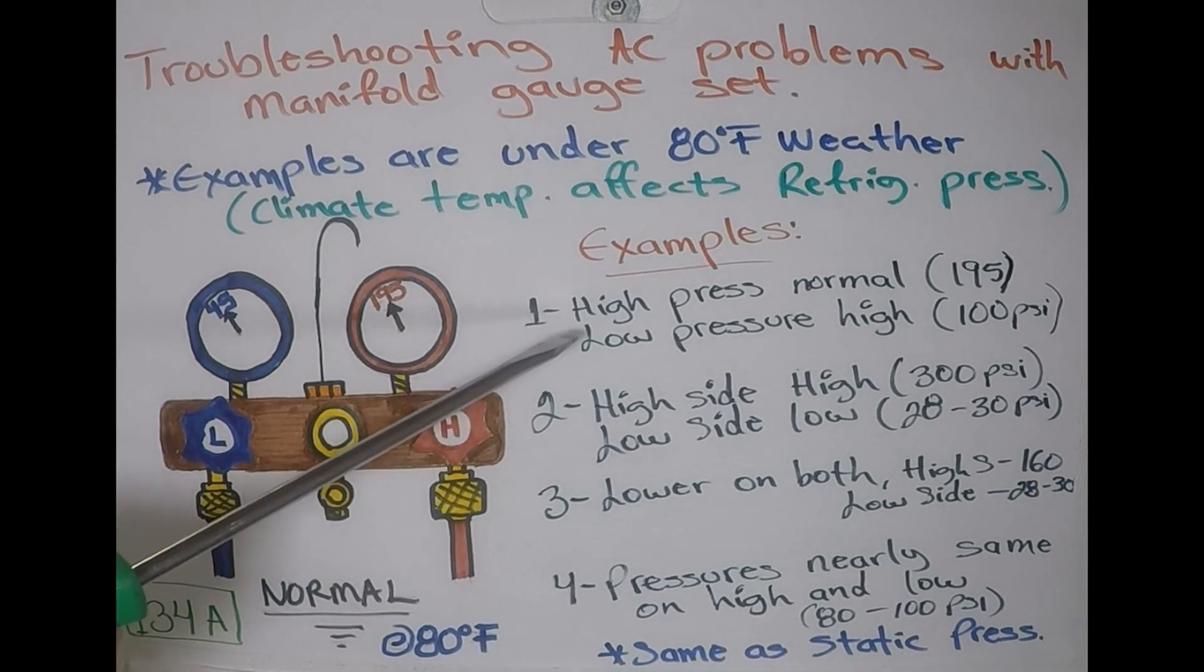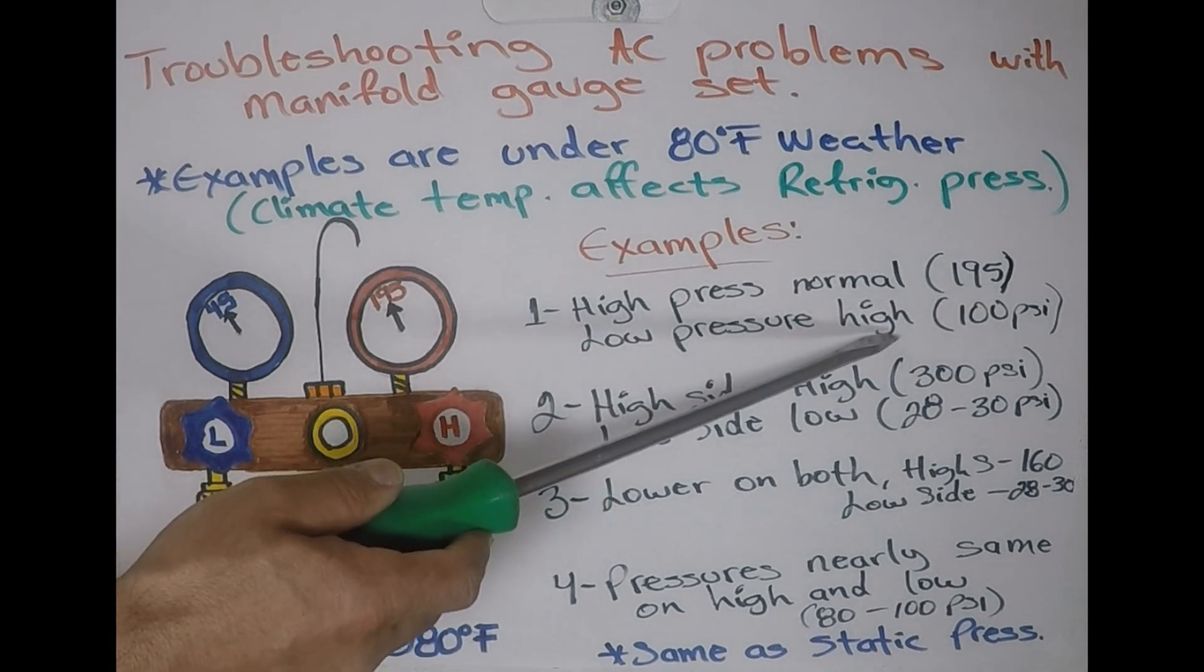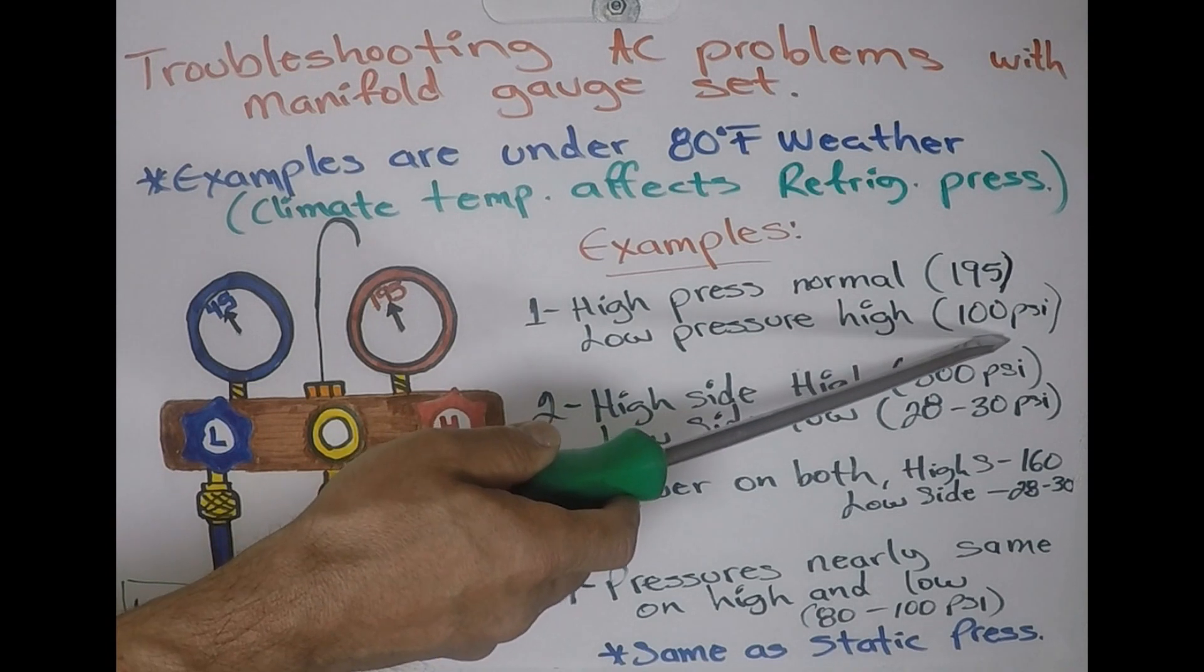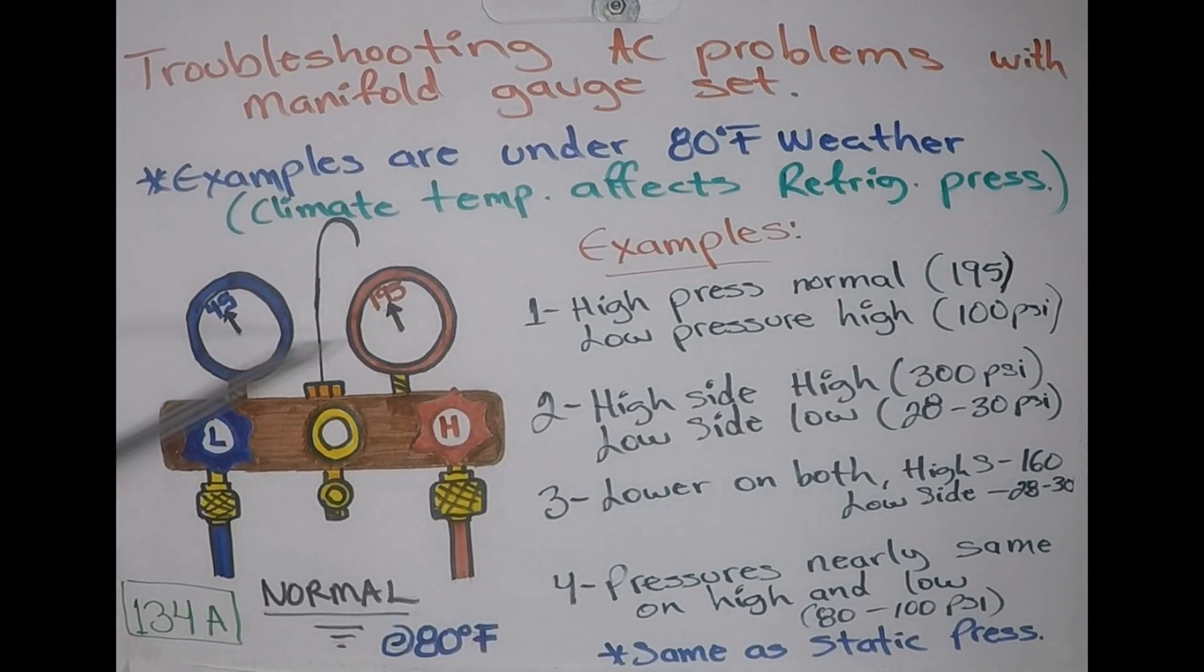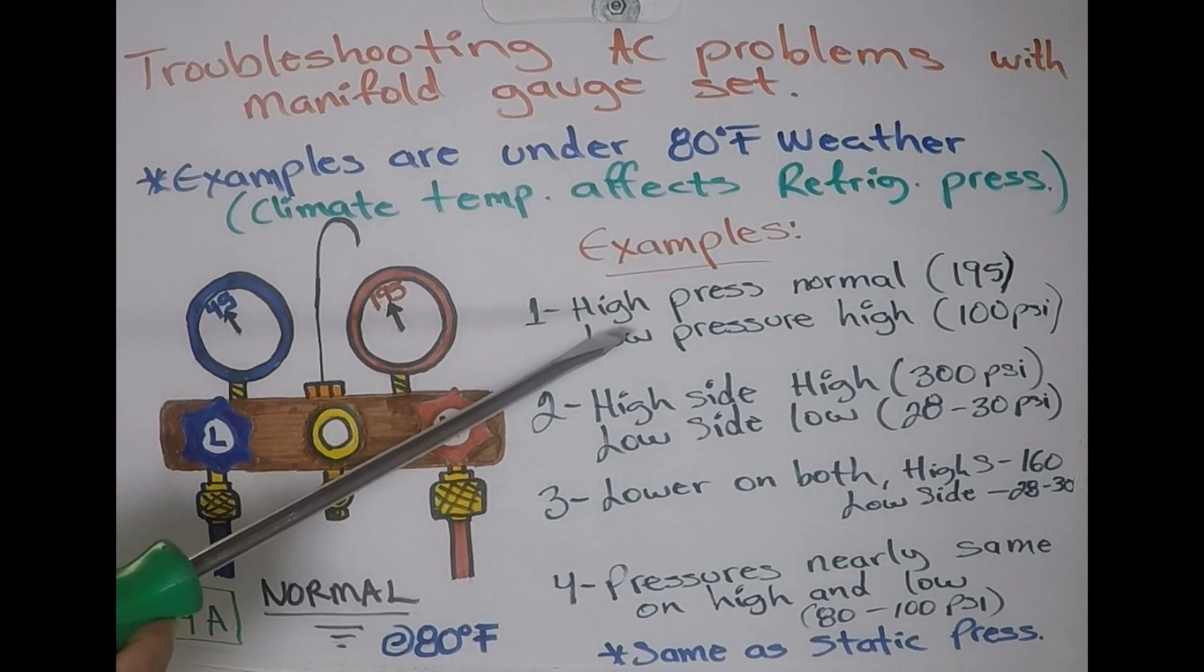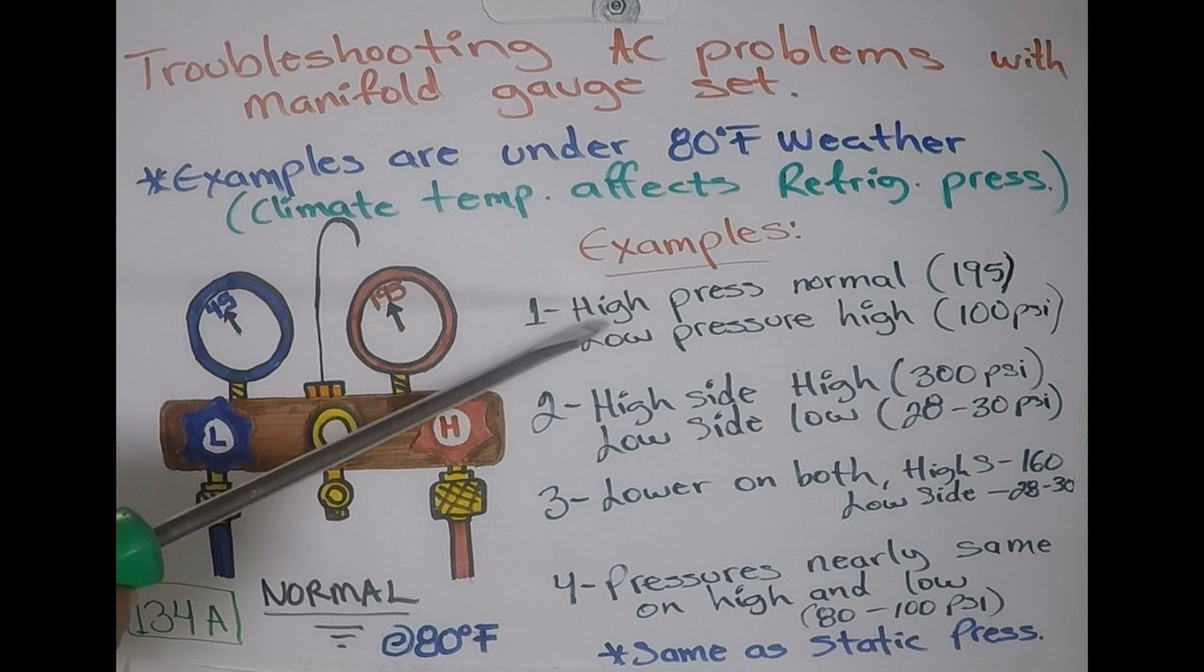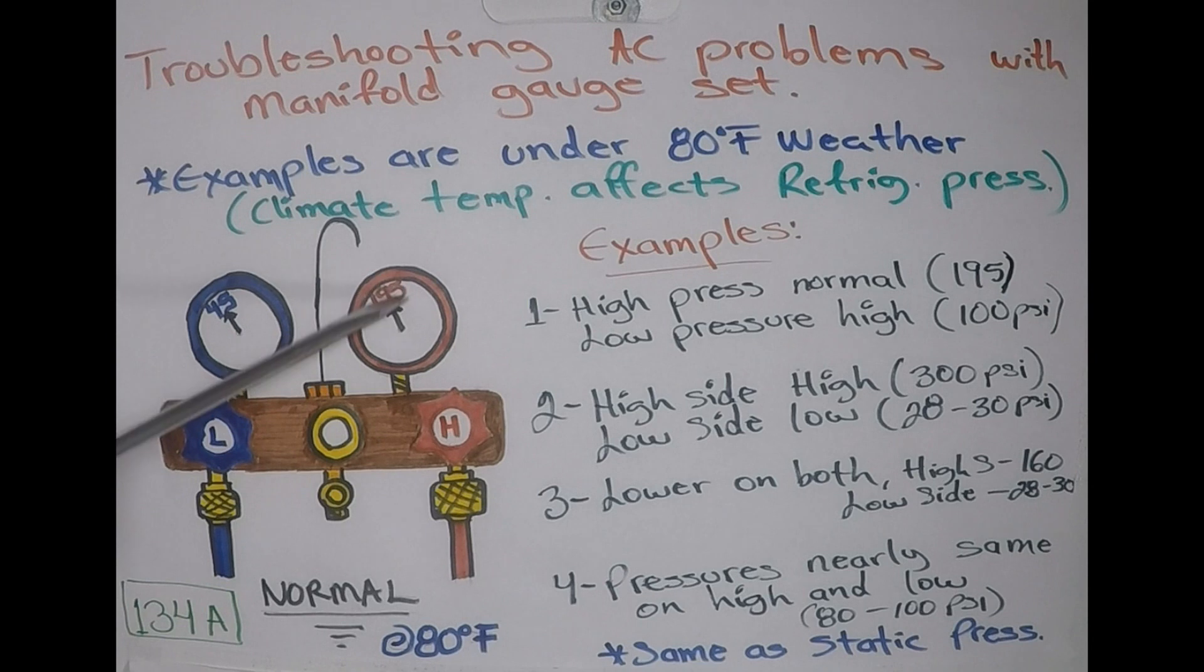So for our first troubleshooting example, let's say that our high side is normal, 195 PSI, but our low pressure is high and it's somewhere around 100 PSI when it should be around 45, if we're talking about 80 degree Fahrenheit. So at that point, what's happening is either going to be an orifice tube defective or an expansion valve, depending on the system, that is allowing too much pressure to go through instead of lowering it to 45.